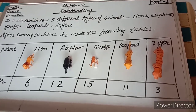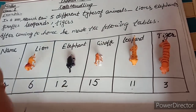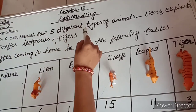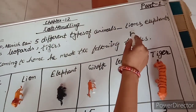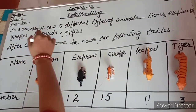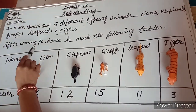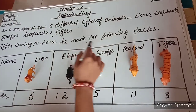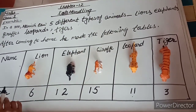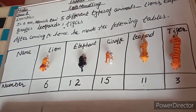Let us observe one example. In a zoo, Manish saw five different types of animals: lions, elephants, giraffes, leopards, and tigers. After coming home, he made the following table showing the name of the animal and number of the animal.